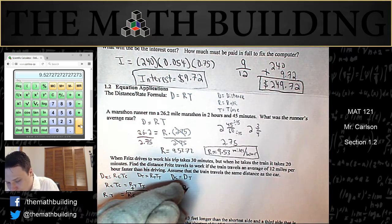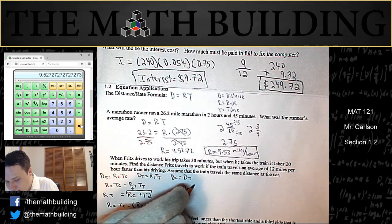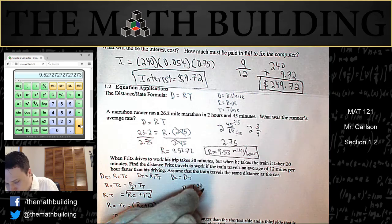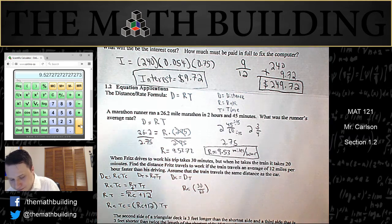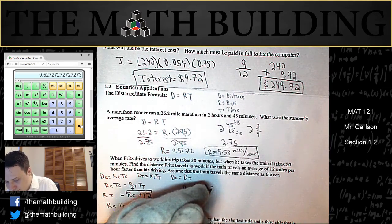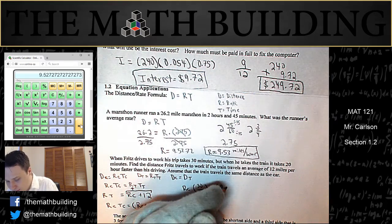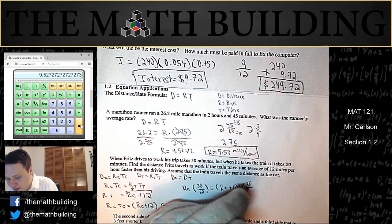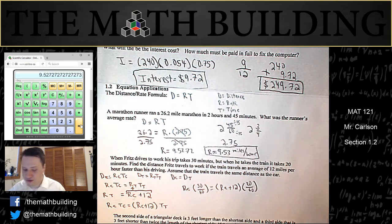The rate of the car times the time of the car which is 30 divided by 60 is equal to rc plus 12 times the rate of the train which would be 20 over 60. So see how I did that.